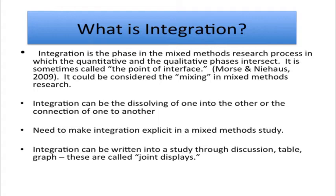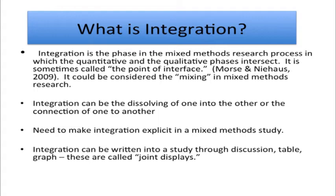Here are the three basic designs and where integration occurs. In the convergent design, integration happens when the qualitative and quantitative data are actually merged. In a sequential design, integration comes between the qualitative and quantitative phases — if it starts qualitatively, you're building to a quantitative phase; if it starts quantitatively, you're explaining that database with qualitative data. Integration can also be embedded, such as when qualitative data is placed before an experiment begins in an intervention design.